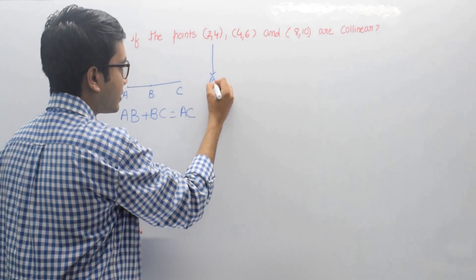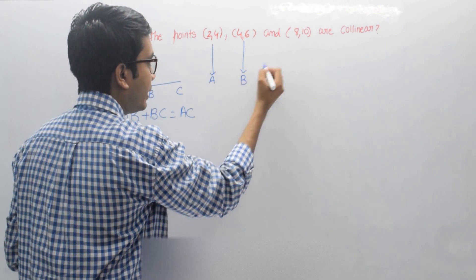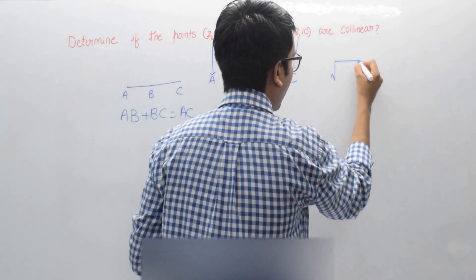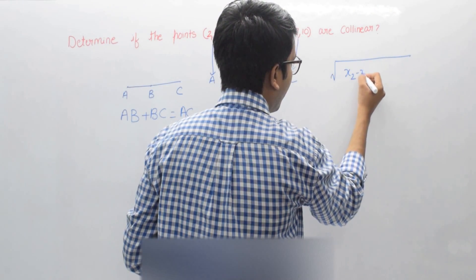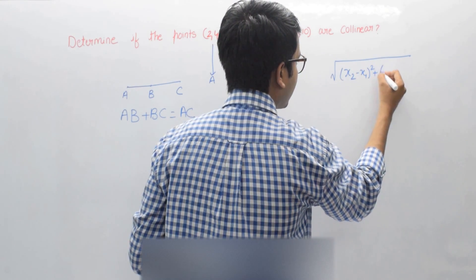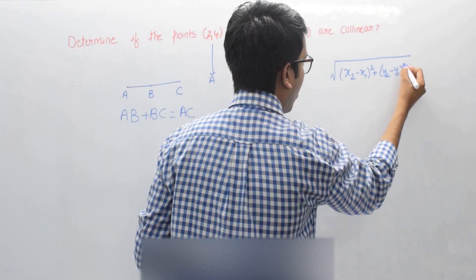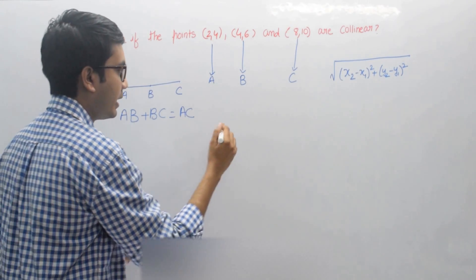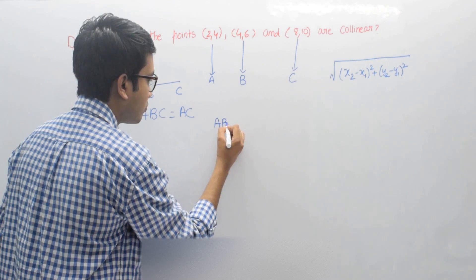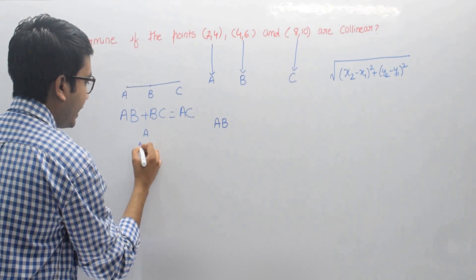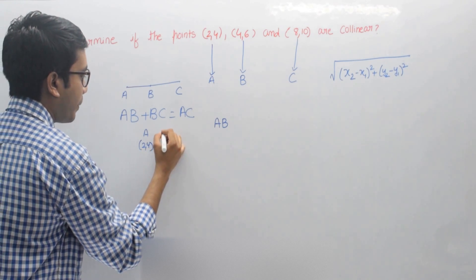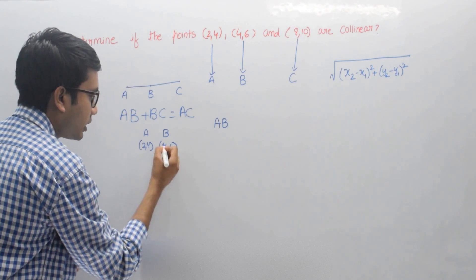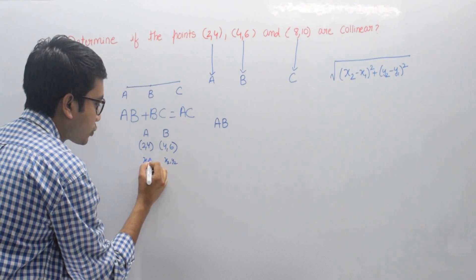Let's take (2, 4) as A, (4, 6) as B, and (8, 10) as C. The distance between two points formula is: square root of (x2 minus x1) whole square plus (y2 minus y1) whole square. First let's find the distance AB. We know point A is (2, 4) and point B is (4, 6). Let's take B as x2, y2 and A as x1, y1.